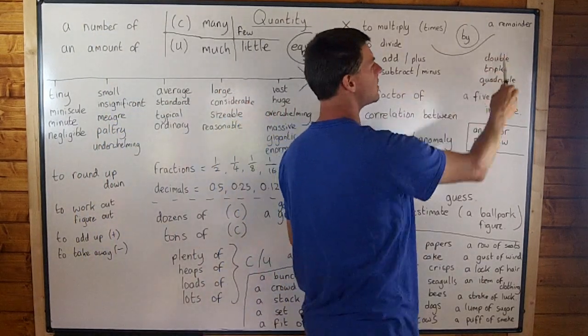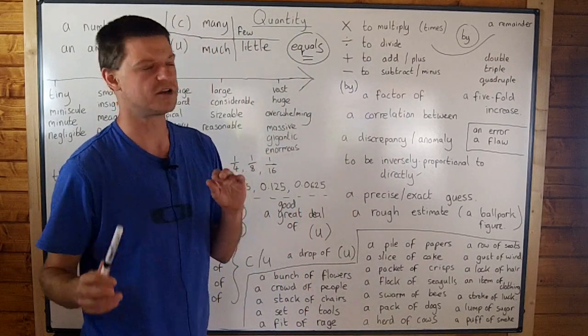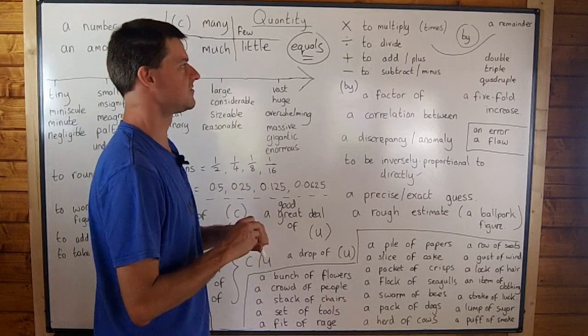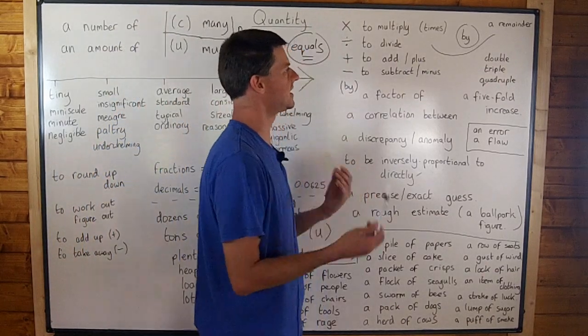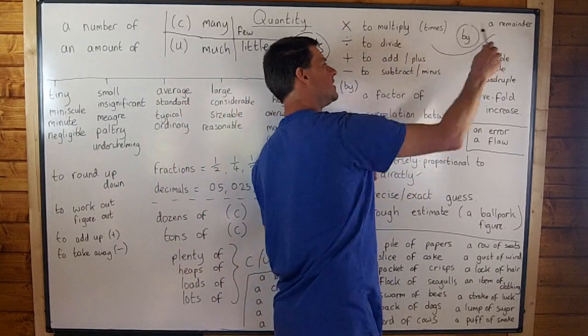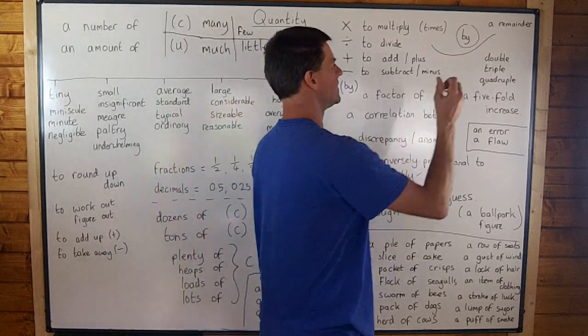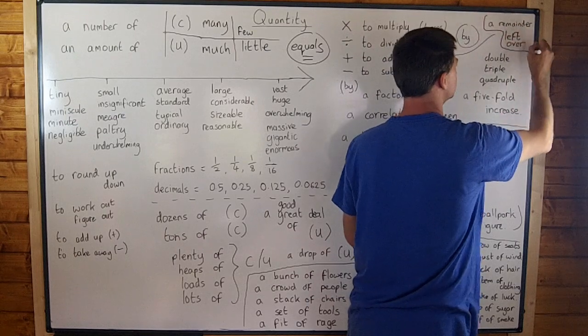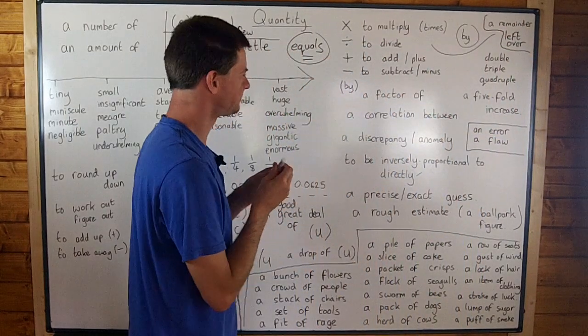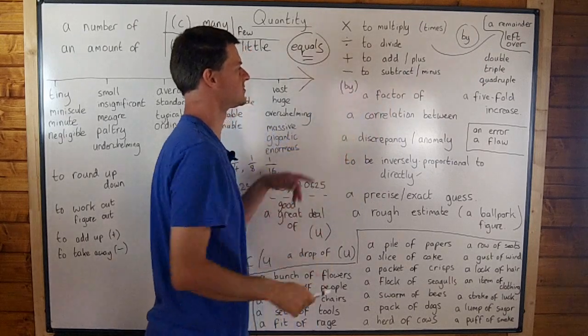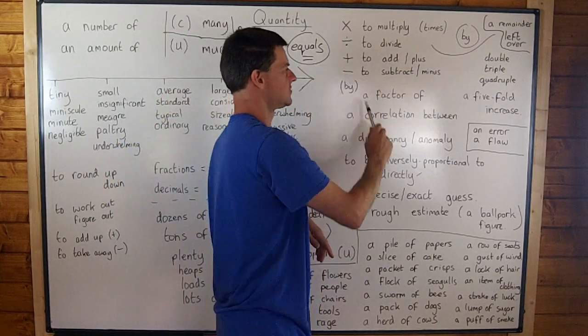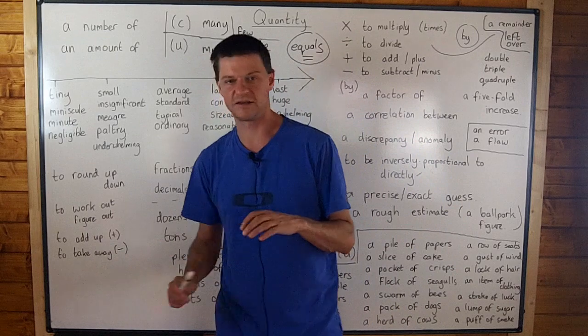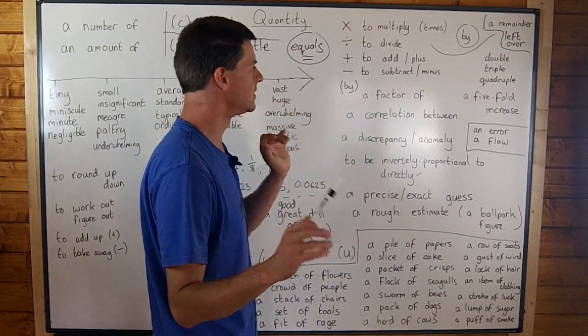And when we divide, sometimes it doesn't divide into a whole number. For example, if you have a number like 45 and you say 45 divided by seven, you need to say 45 divided by seven equals six remainder three. There's three left over. Left over also kind of means to remain, left over. So there's a remainder of three, there's three left over. You can also add or plus if you're talking about this one or subtract or minus if you're talking about this one. And there's two phrasal verbs here, to add up is plus and to take away is minus. So they may also be quite useful.